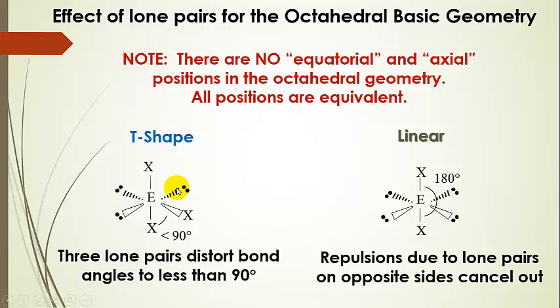The next one, if we add yet another lone pair, now you can pick any position. Notice these two are 180 degrees apart, and then we added another one. That makes a T-shape. So here's your T-shape, these two atoms that are up and down, and then one sticking out. These bond angles are also less than 90, so this one's less than 90, even though it doesn't look like it. Bond angles are distorted to less than 90.